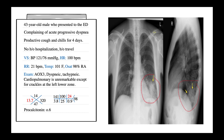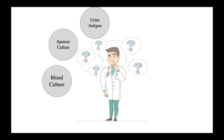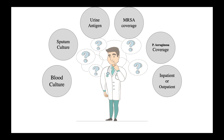By looking at the patient's presentation and the chest X-ray changes, the diagnosis is community-acquired pneumonia. The resident taking care of this patient had many questions: Should we obtain blood cultures? Sputum cultures and nasal PCR? Urine legionella antigen and strep pneumonia antigen? Should we treat the patient empirically without any cultures? Should we add MRSA or pseudomonas coverage? Should we treat the patient as an inpatient or outpatient? The ATS and IDSA guidelines published in October 2019 address all of these questions and make them easy to follow.